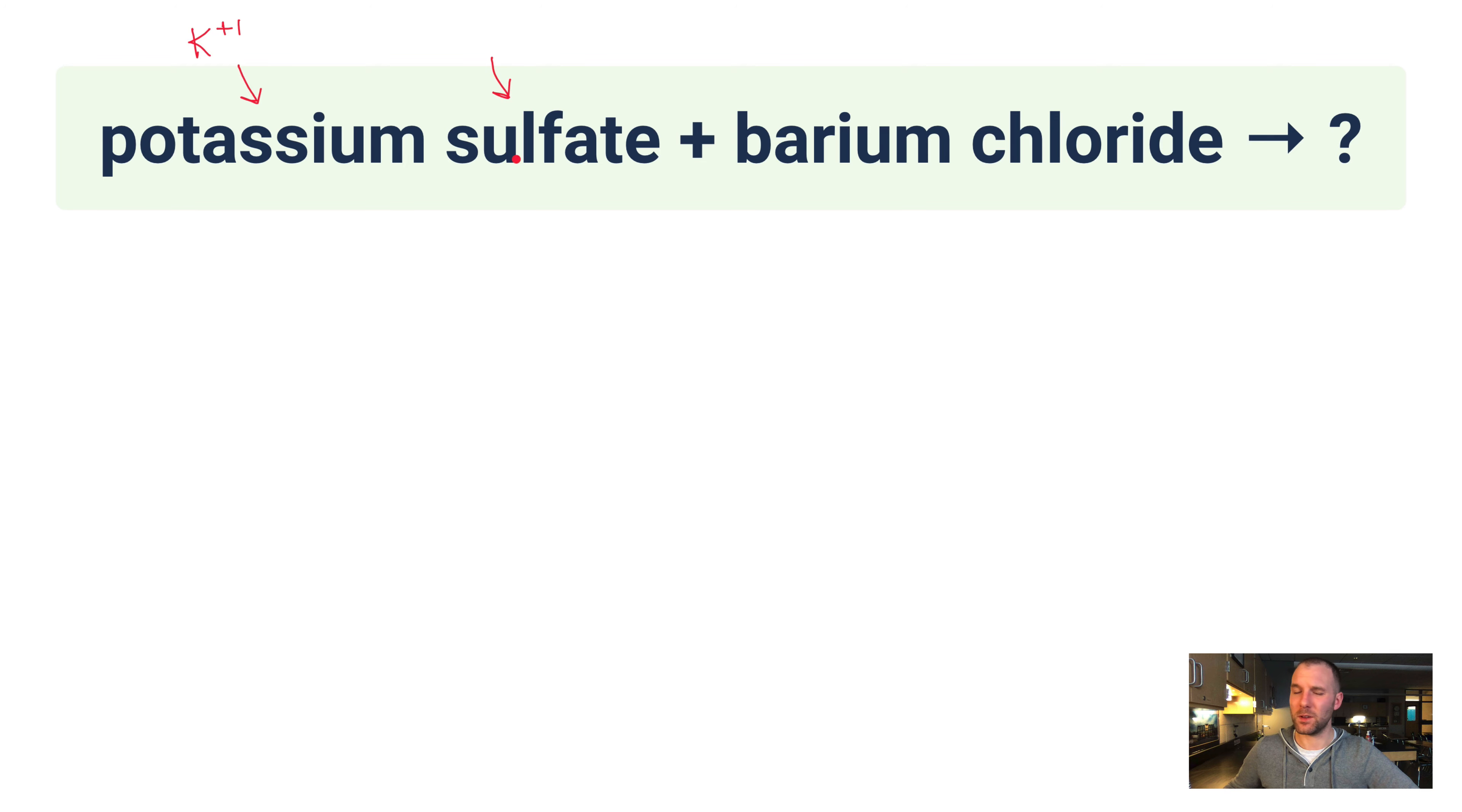So potassium is K with a +1 charge because it's in group 1. Sulfate, again, if you need to reference that polyatomic ion list, go ahead and do that. But you might have this memorized. Hopefully you do. It's SO4 with a -2 charge. Barium is Ba. It's in group 2, so it gets a +2 charge. And chloride is Cl with a -1, just like in the last problem.